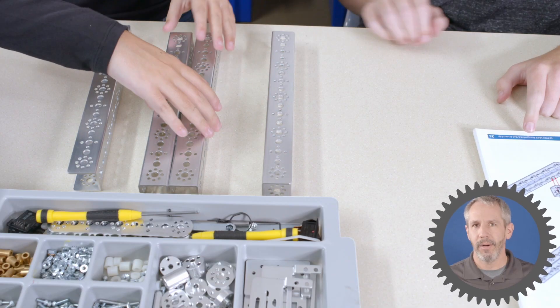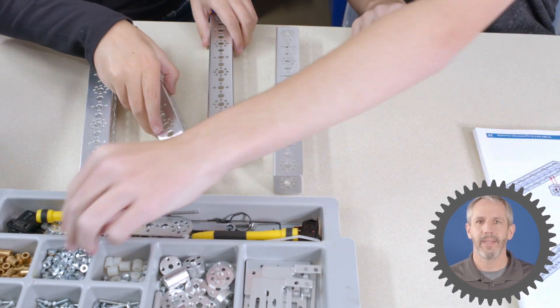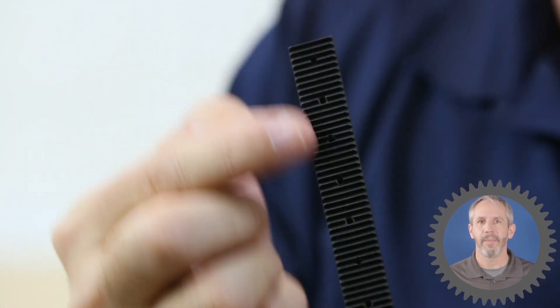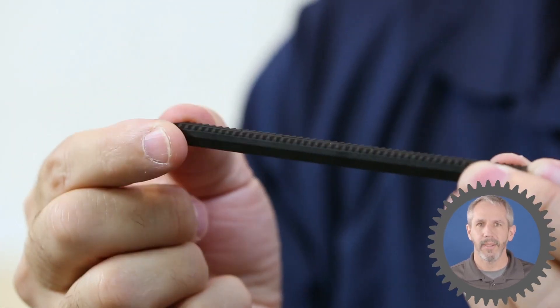Next, consider the parts that you have to build your lifting mechanism. There are several TETRIX MAX components that make building lifting mechanisms easier, so let's look at some examples.